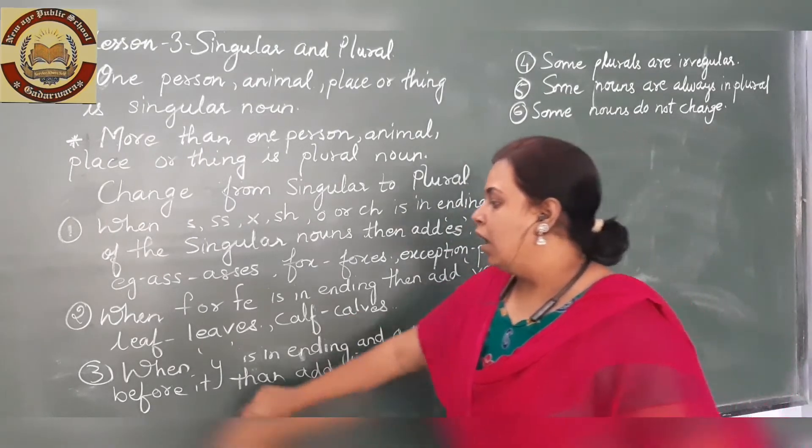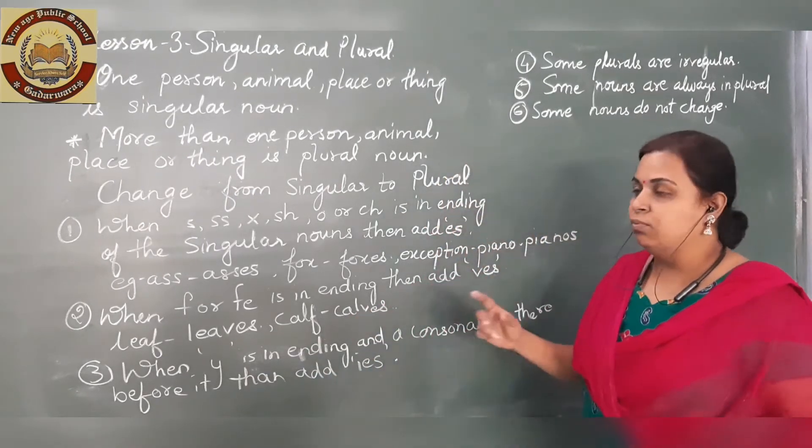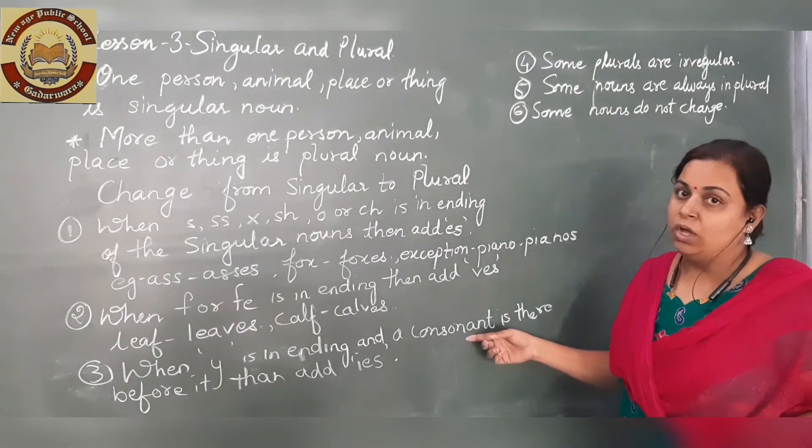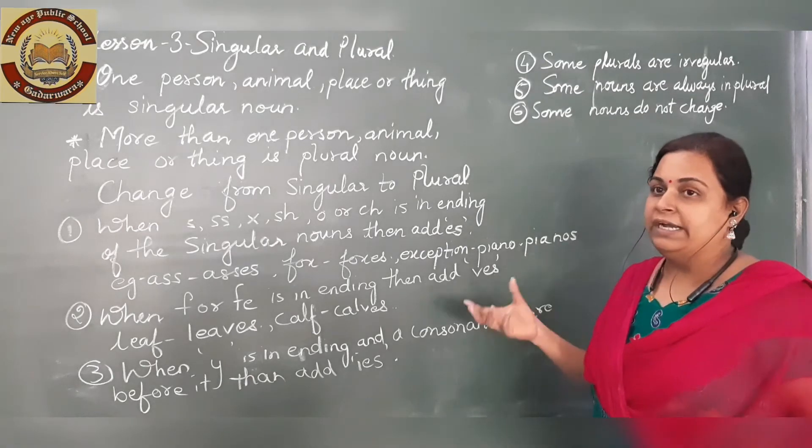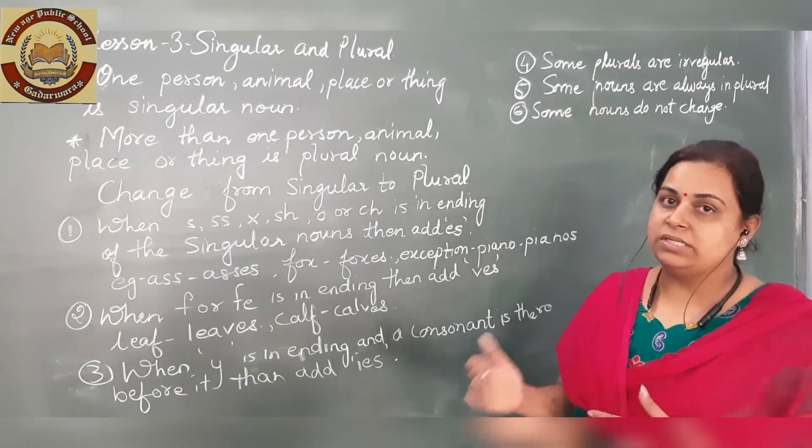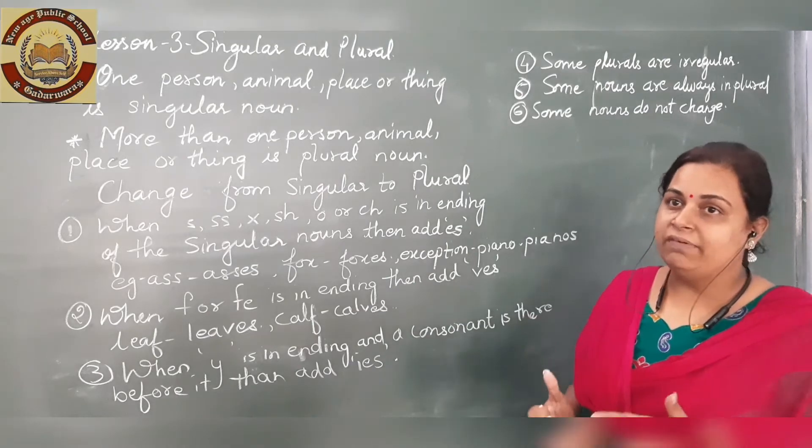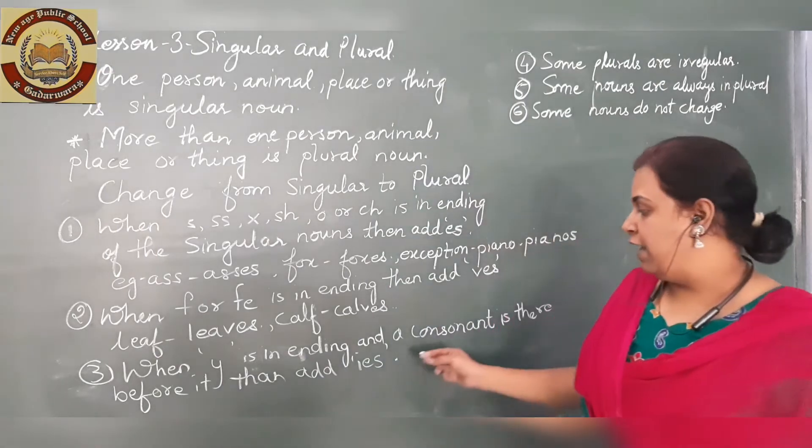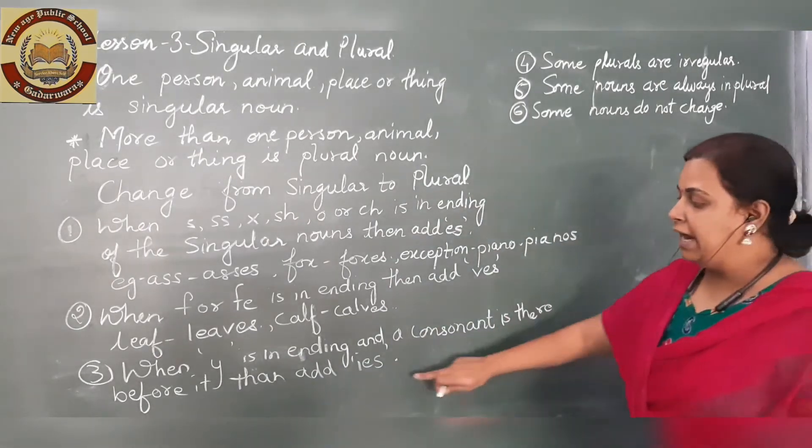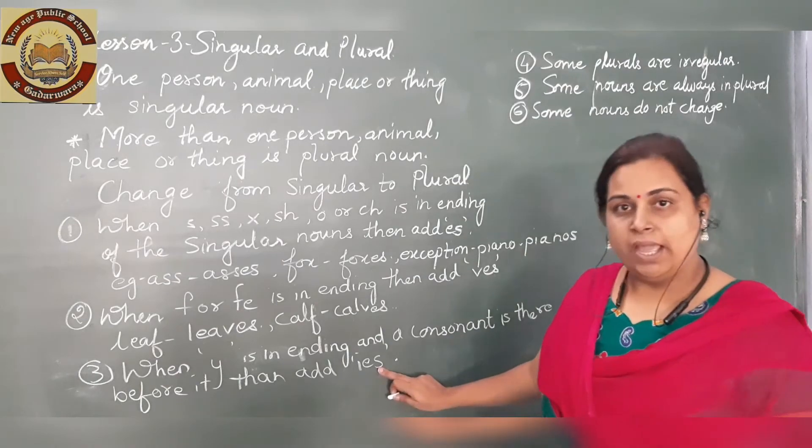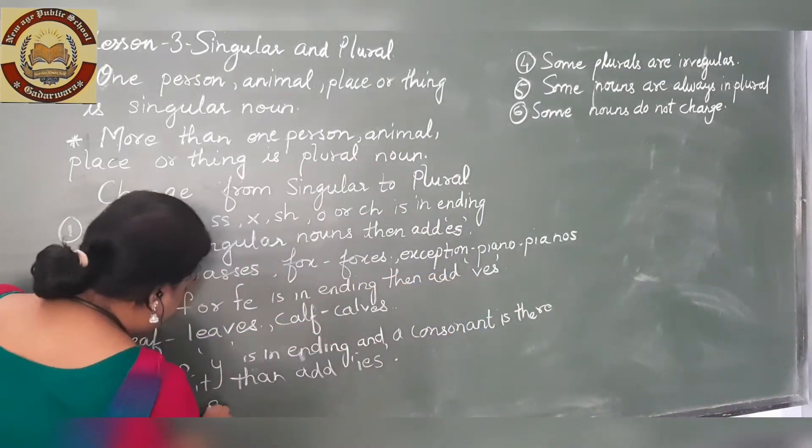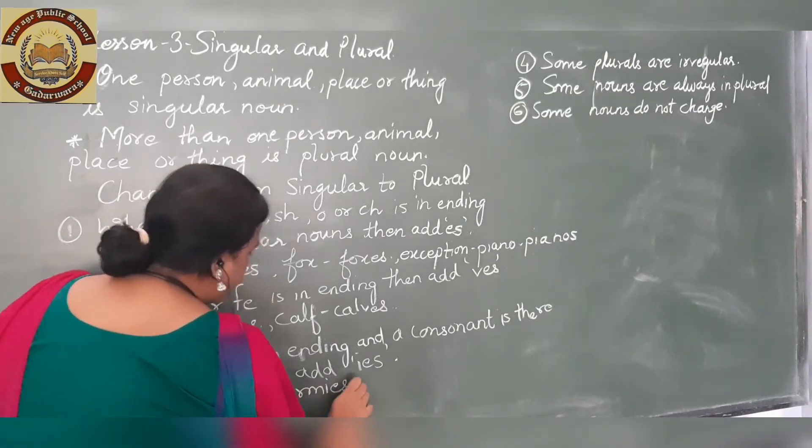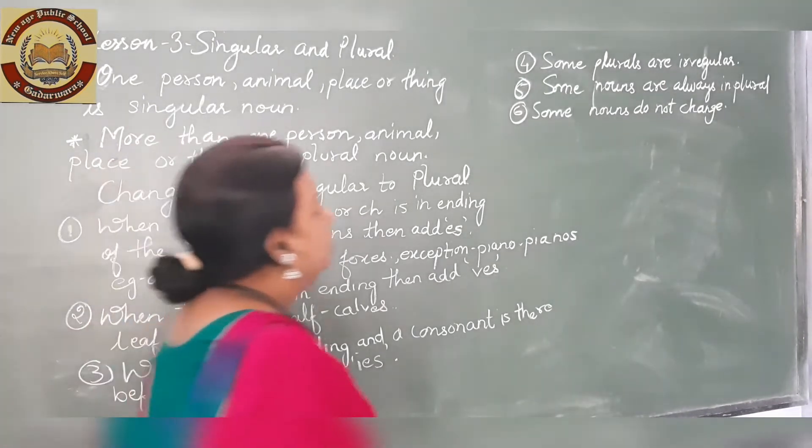Now if Y is at the ending and a consonant comes before Y - consonants are 21 of the 26 letters in the alphabet - then change Y to IES. For example, army becomes armies.